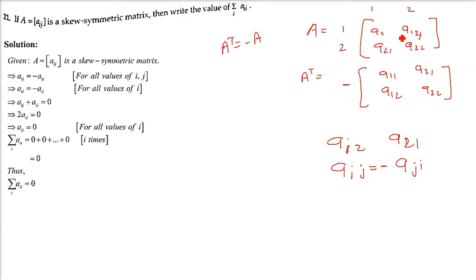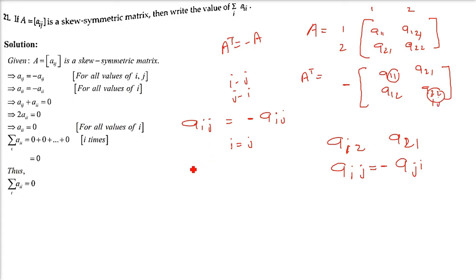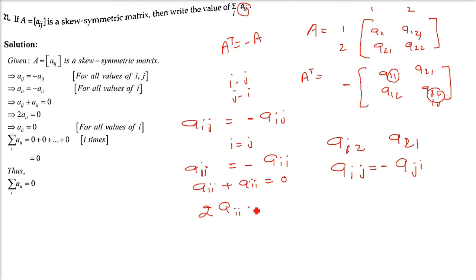When i equals j, we get diagonal elements: Aii = -Aii. Replacing i and j both with i gives Aii on both sides with a negative, so Aii + Aii = 0, giving 2·Aii = 0, therefore Aii = 0. This means all diagonal elements A11, A22, A33 are zero.